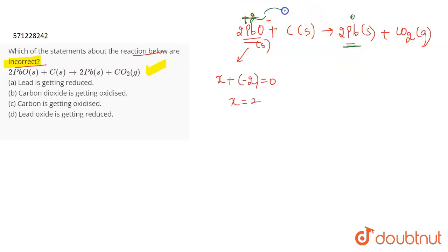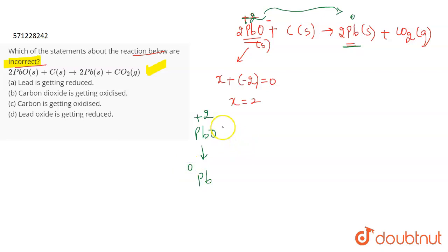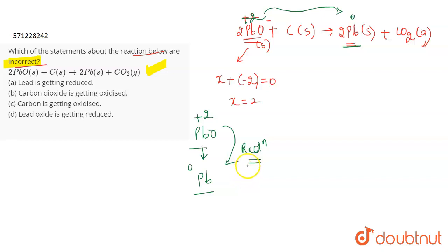Lead oxide: the oxidation state of lead is decreasing from plus 2 to 0. In PbO the oxidation state is plus 2, whereas when it converts into Pb the oxidation state is 0. So the oxidation number is decreasing — that means reduction is happening. So lead oxide is getting reduced to lead.